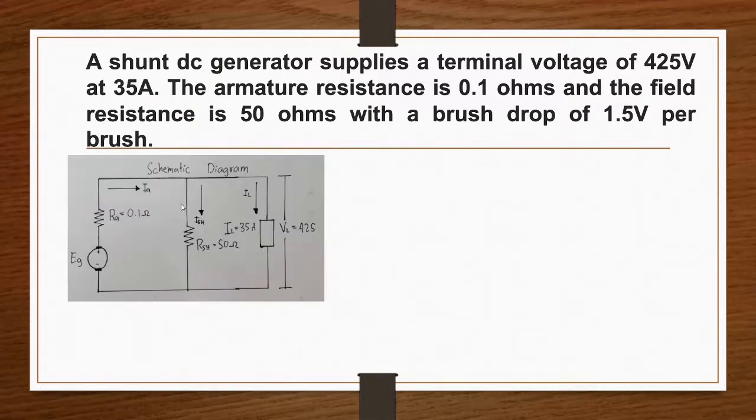This is our schematic diagram of our circuit. As we have noticed here, since our diagram is a parallel connection, by inspection we can say that our armature current is equal to our load current plus our shunt field current.